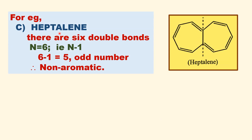Let us see another example: ketalene. This compound possesses a C2 axis of symmetry. It is a polycyclic non-benzenoid compound — there is no benzene ring in it. Counting the double bonds: 1, 2, 3, 4, 5, 6. There are 6 double bonds. N minus 1 equals 6 minus 1 equals 5, which is an odd number. Therefore, this compound is non-aromatic.